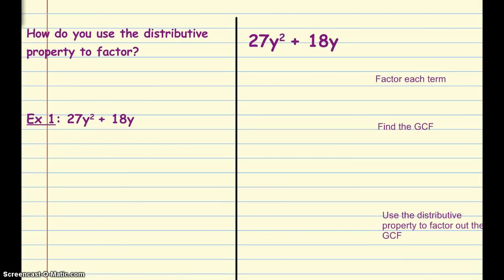So let's start right into example number one, and it is how do you use the distributive property to factor? Well back in the previous lesson, we talked about how to factor monomials. So the first thing that we're going to do is factor each term. And I know that 27 can be broken down as 3 times 9, and y squared becomes y times y. 3 is prime, so I'm done. 9 is not. I'm going to break that down as 3 times 3. So I have 3 times 3 times 3 times y times y for the first term.